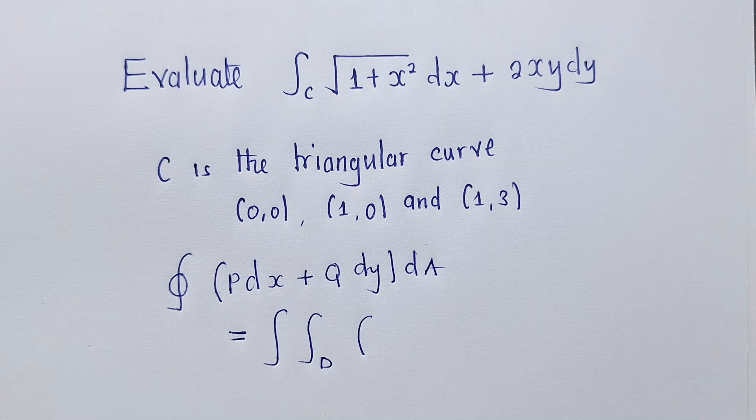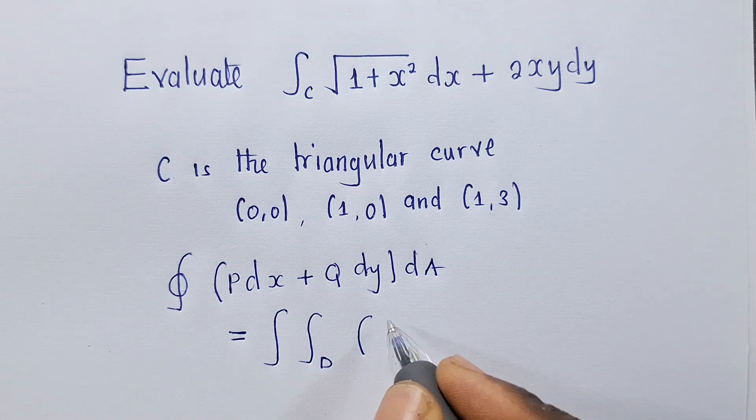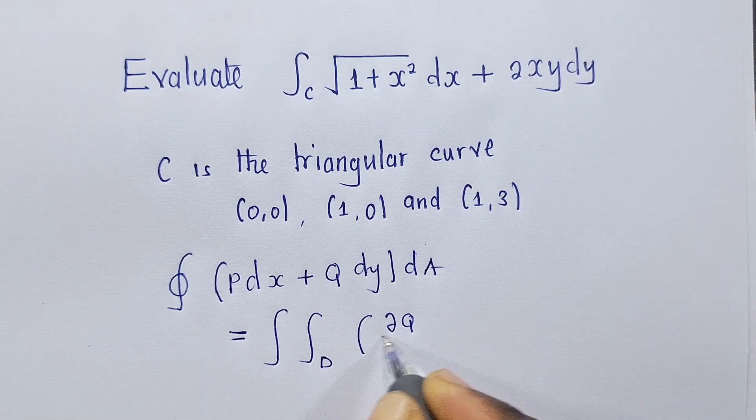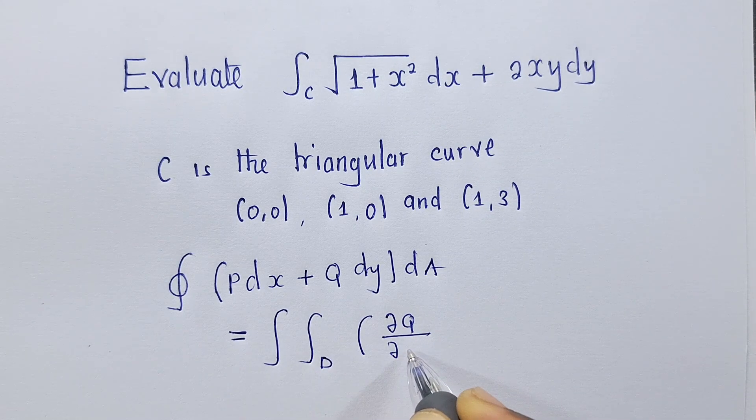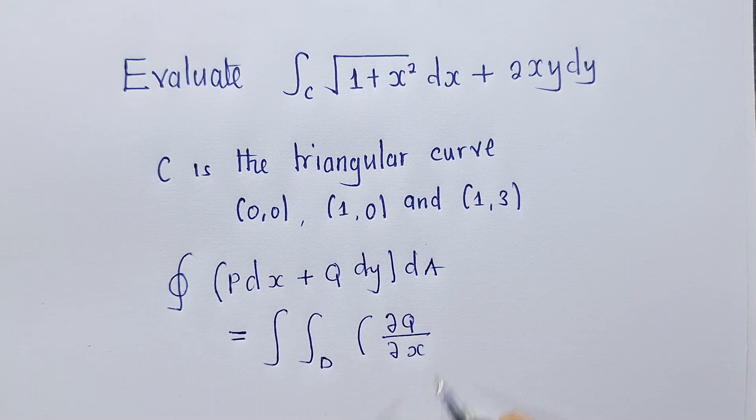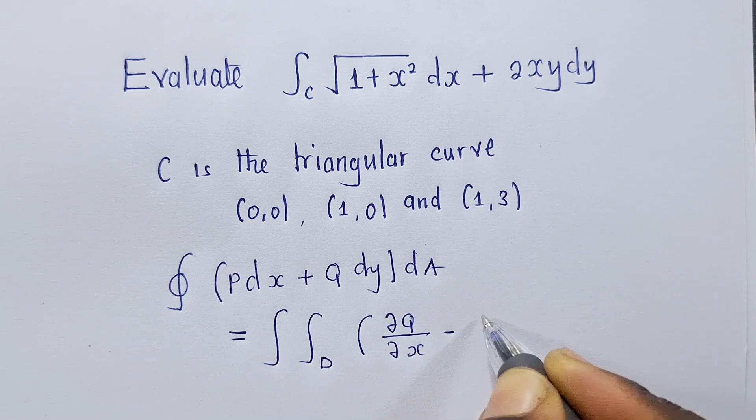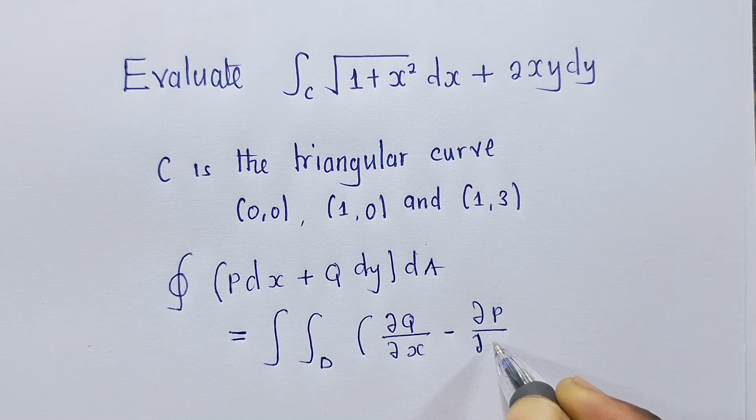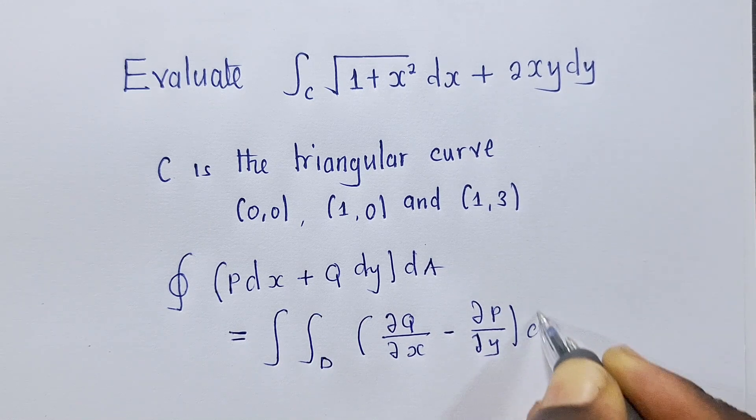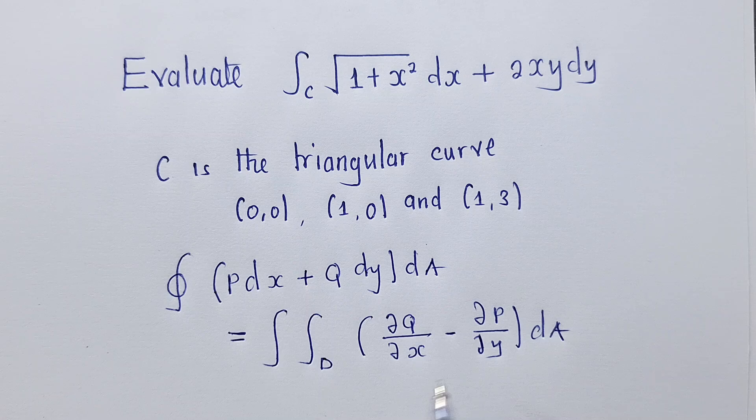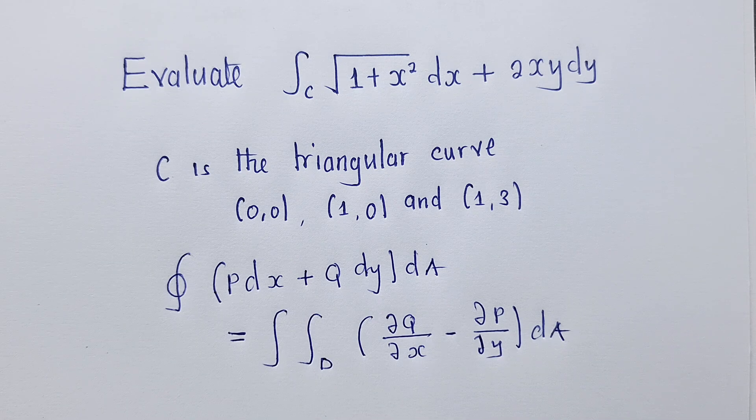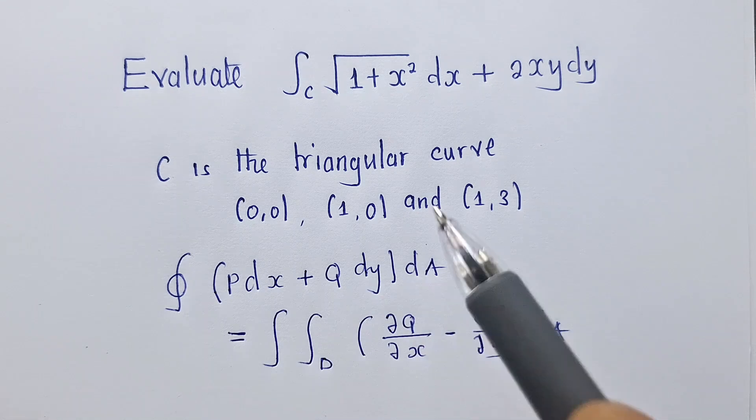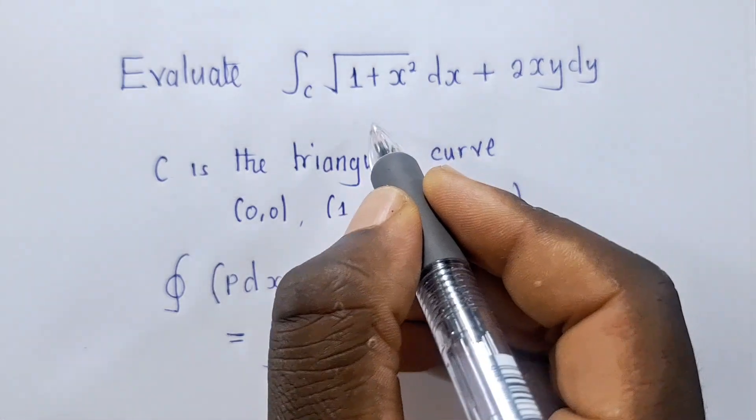The double integral of the partial derivative of Q with respect to x minus the partial derivative of P with respect to y over some region. Let me just explain what I've just done here.